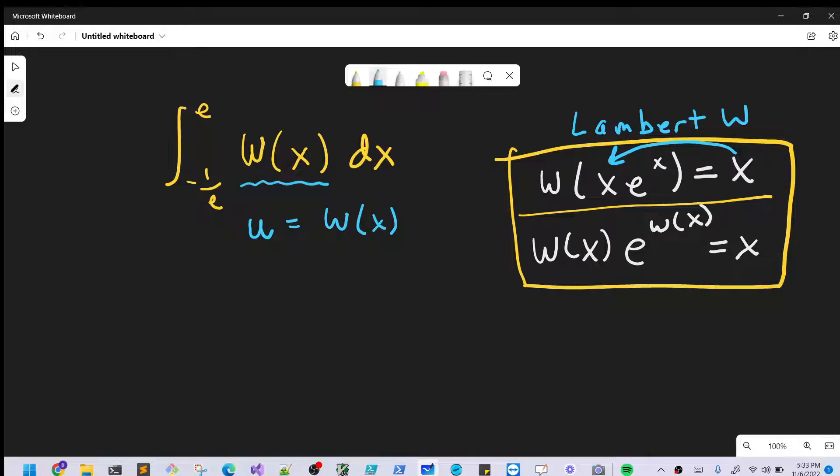If we have a u, we can actually rewrite this as W(u) e to the u, right? Just noticing if we use that formula the other way, we get back our u.